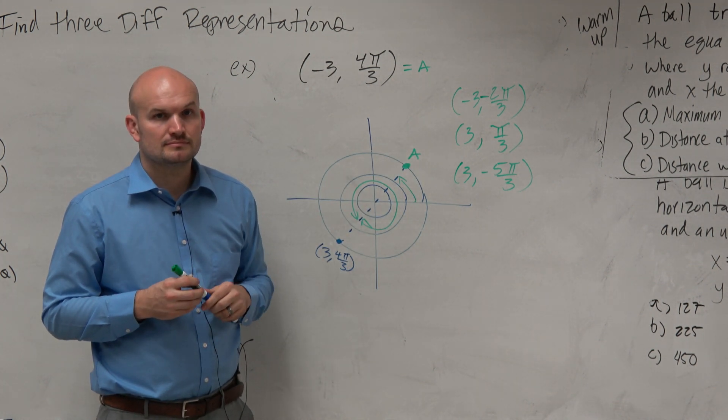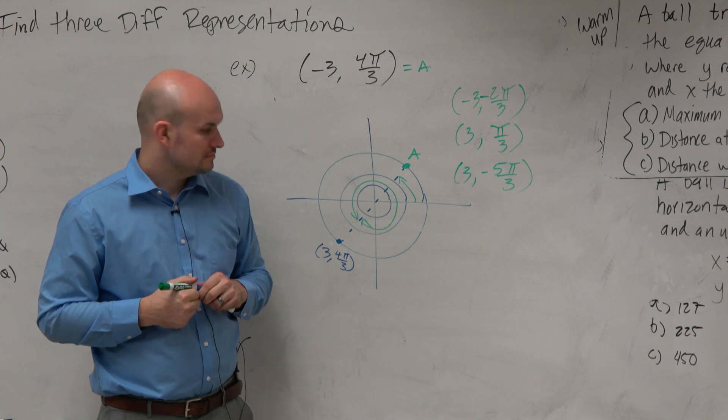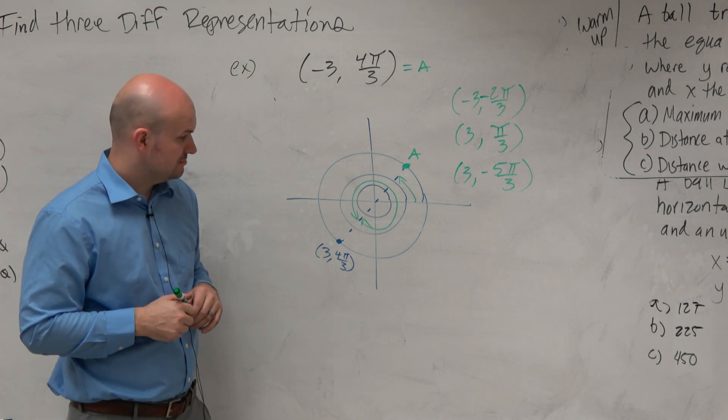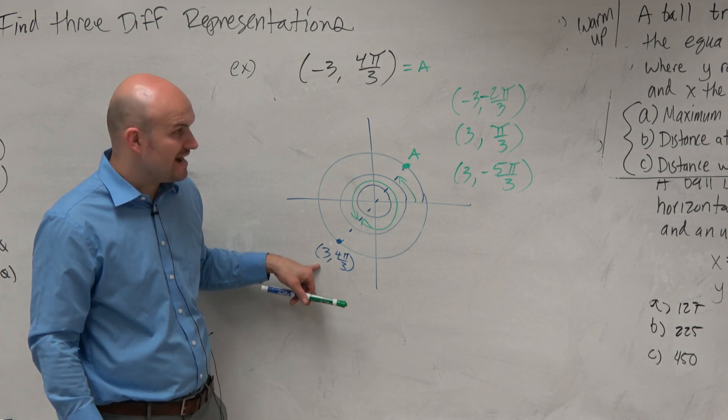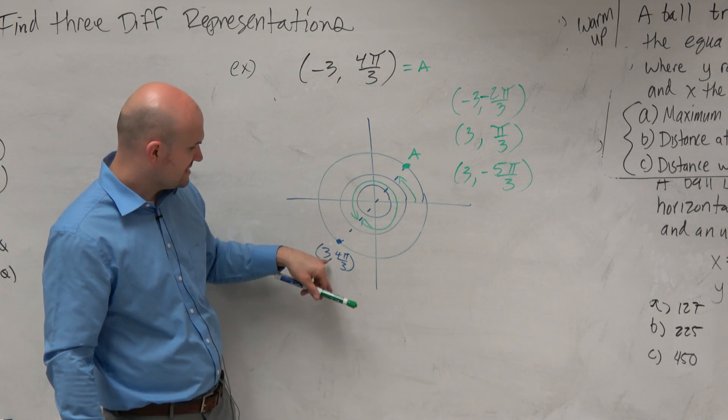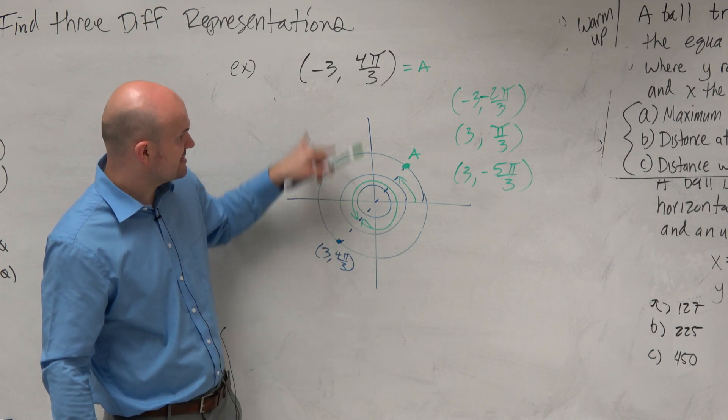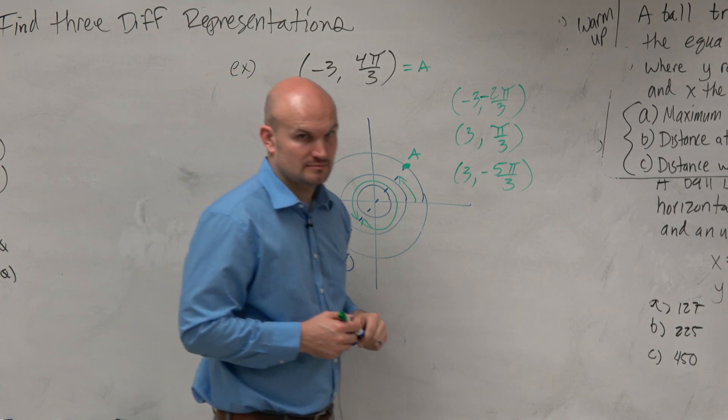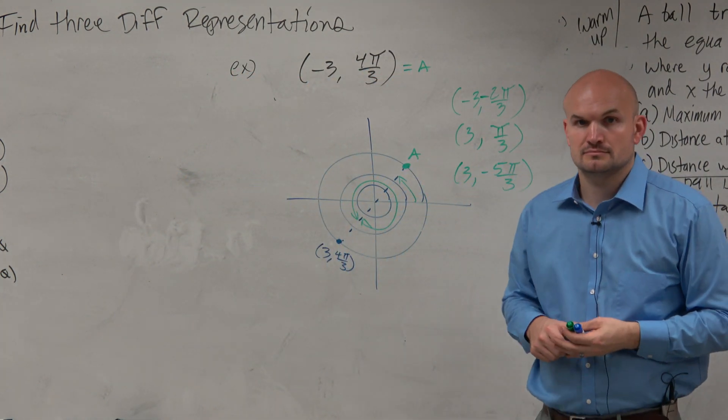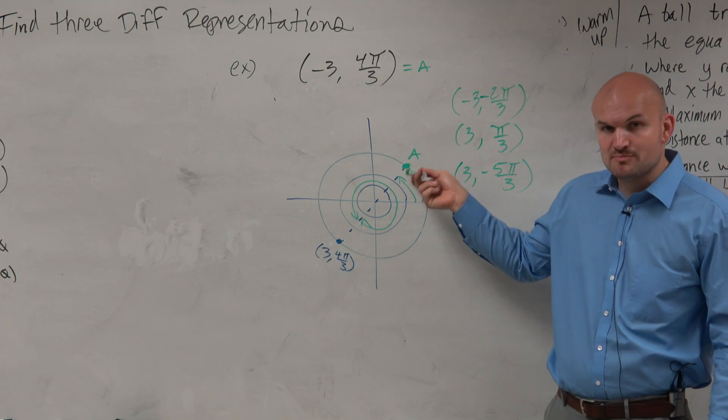Student: But then how is that equal to 3, 4? It's not equal. I was just using that to show you guys how to graph, how to find that point. This is not equal to any of those, this point is not equal to any of those.